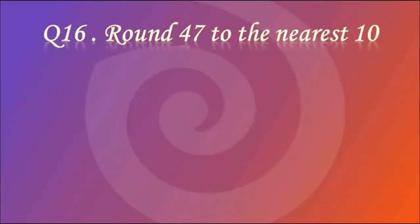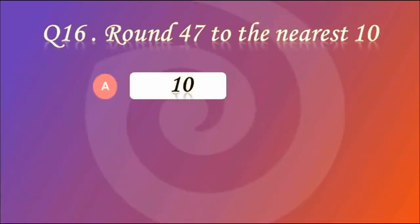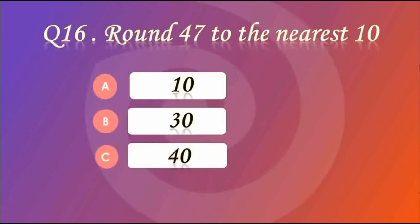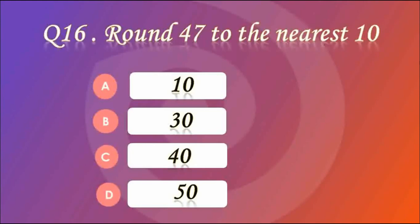Question number 16. Round 47 to the nearest 10. Options are 10, 30, 40 and 50. Answer D — 50. The nearest number is 50.